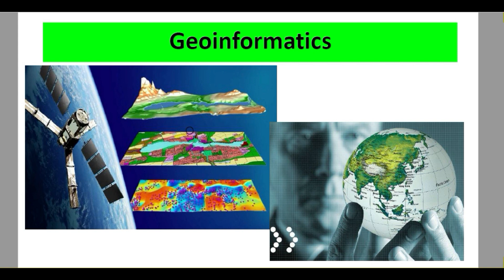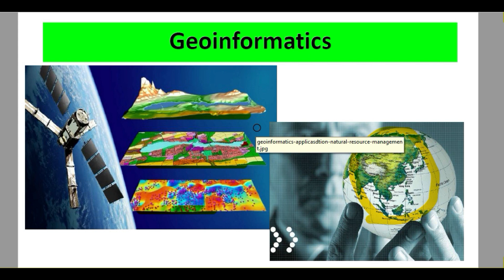Before we start, just observe these two figures. Here you can see the globe and some physical features of our globe, with a person analyzing something. And here you can see a satellite orbiting our earth and satellite images which we get. We can extract different layers of features from that particular satellite. You will get your answers related to your queries and doubts in subsequent sessions.